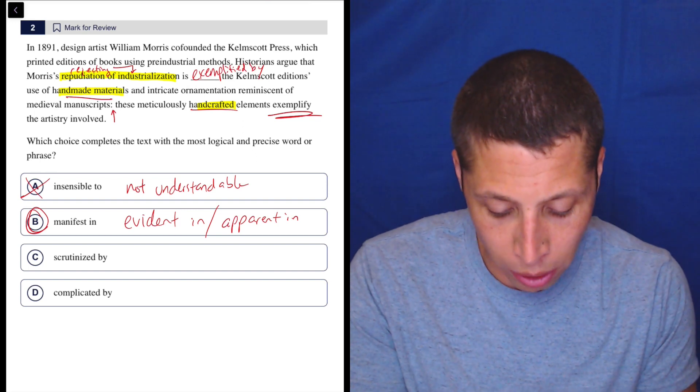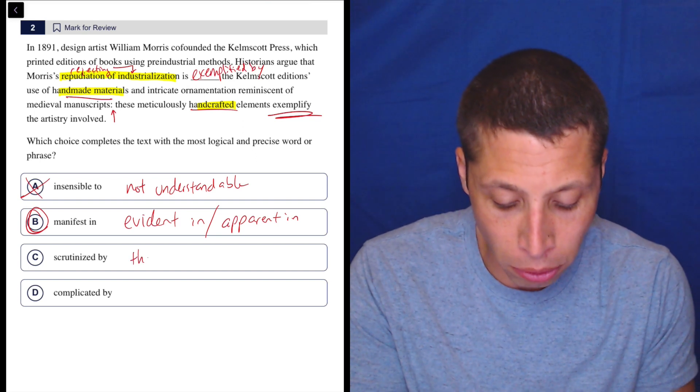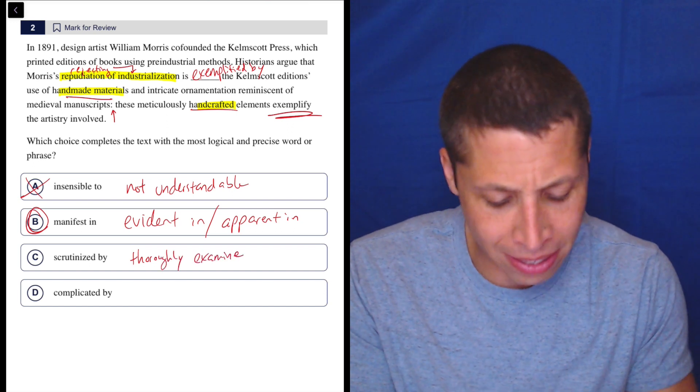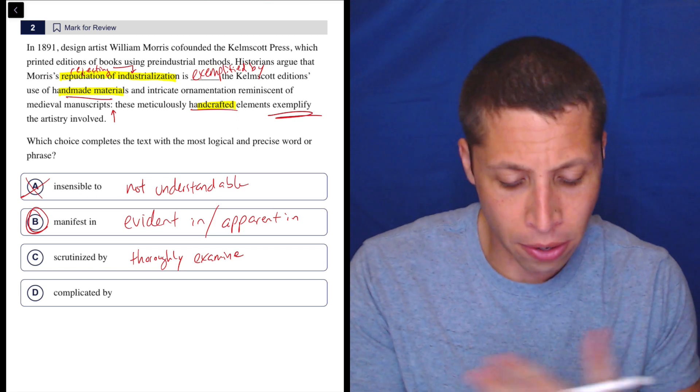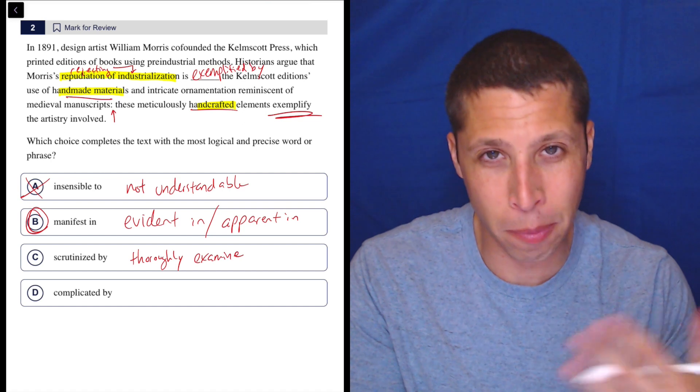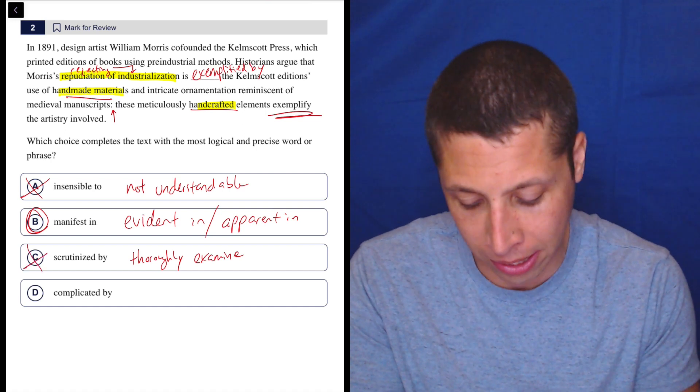Scrutinize means to kind of very thoroughly examine. So it just doesn't make sense. His repudiation of industrialization is scrutinized by these editions. It's a book. How can it scrutinize anything? It doesn't make any sense.